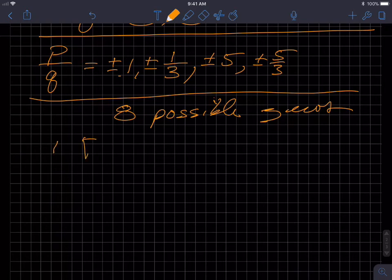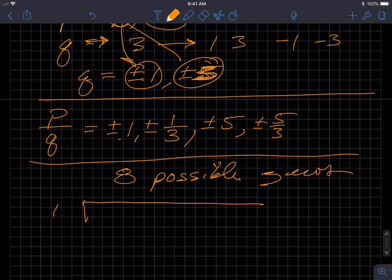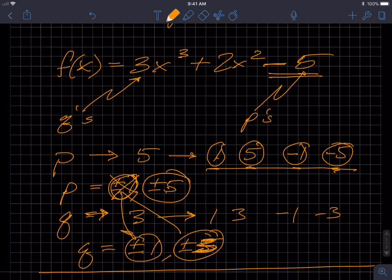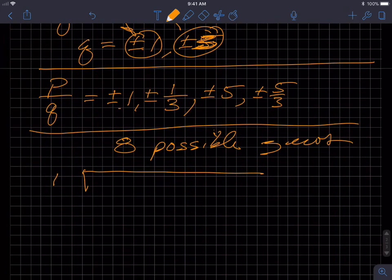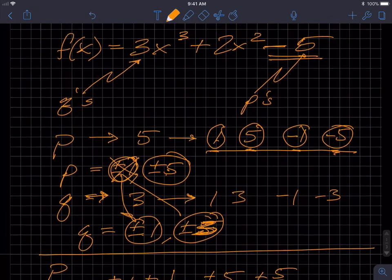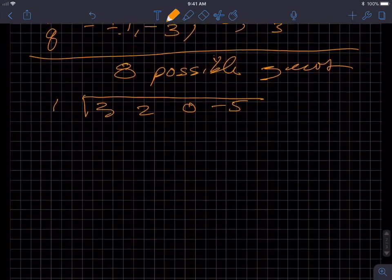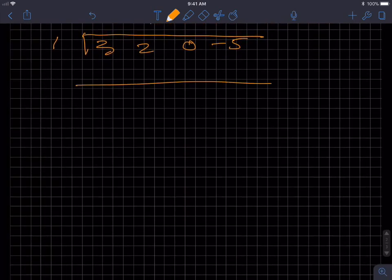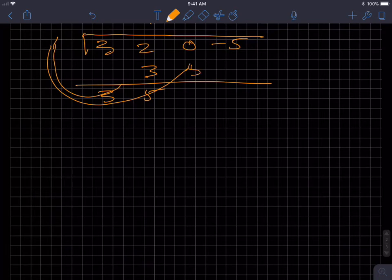So my possible zero would be 1, and I could do my synthetic division. I've got to go back and grab the coefficients, 3, 2, 0, and negative 5. 3, 2, 0, negative 5. Notice I didn't forget putting in my 0 term, I was just double checking that 2 was positive. And so again I carry down the 3, multiply 3 times 1 I get 3, add I get 5, 1 times 5 is 0, I'm sorry, 1 times 5 is 5, 0 plus 5 is 5, 1 times 5 is 5, and I get 0.